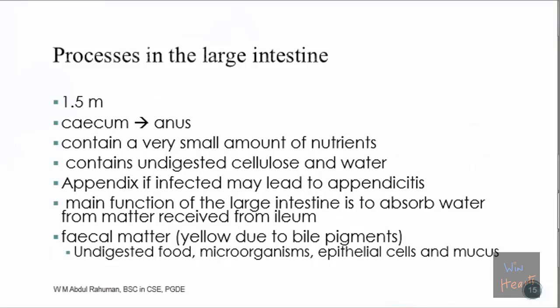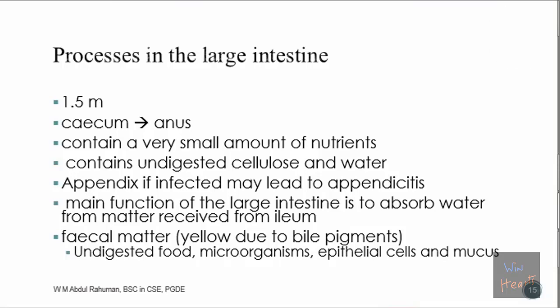Now let's go through processes in the large intestine. Physically, the large intestine looks bigger than the small intestine, but actually the large intestine is only 1.5 meters in length, while the small intestine is much longer at 7 meters. The large intestine starts from the cecum and ends at the anus via the rectum. Since most nutrients are already absorbed in the small intestine, the amount of nutrients in the large intestine is very low.